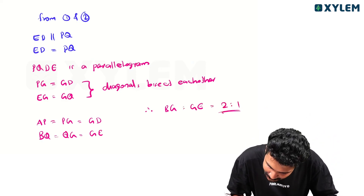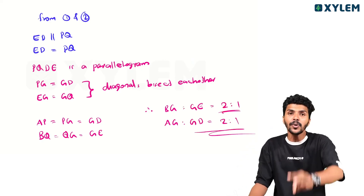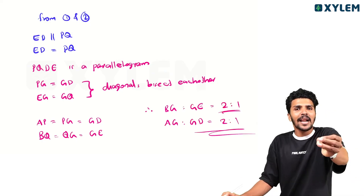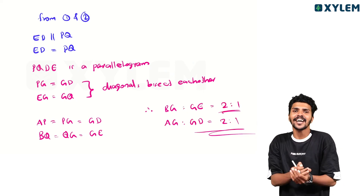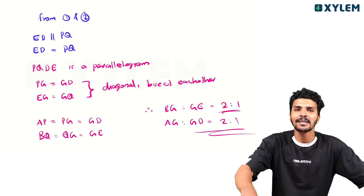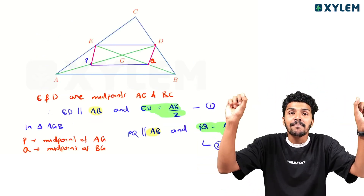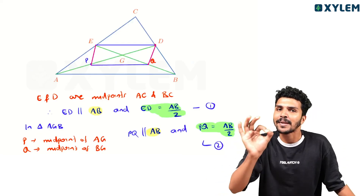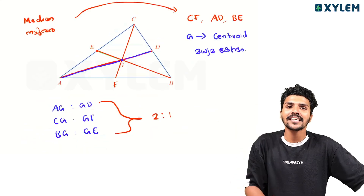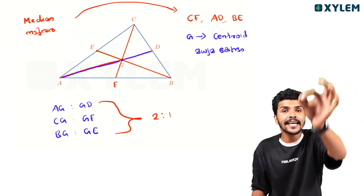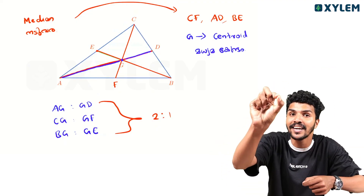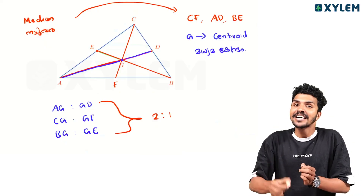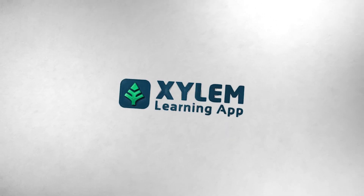Simple. We have tried. The midpoint theorem applies on two sides, the parallel line is the third side, and the median connects a midpoint to the opposite vertex. If you have three medians, they meet at a single point called the centroid or Madhyama Kendra. Please like, comment, subscribe. Goodbye. Thank you.